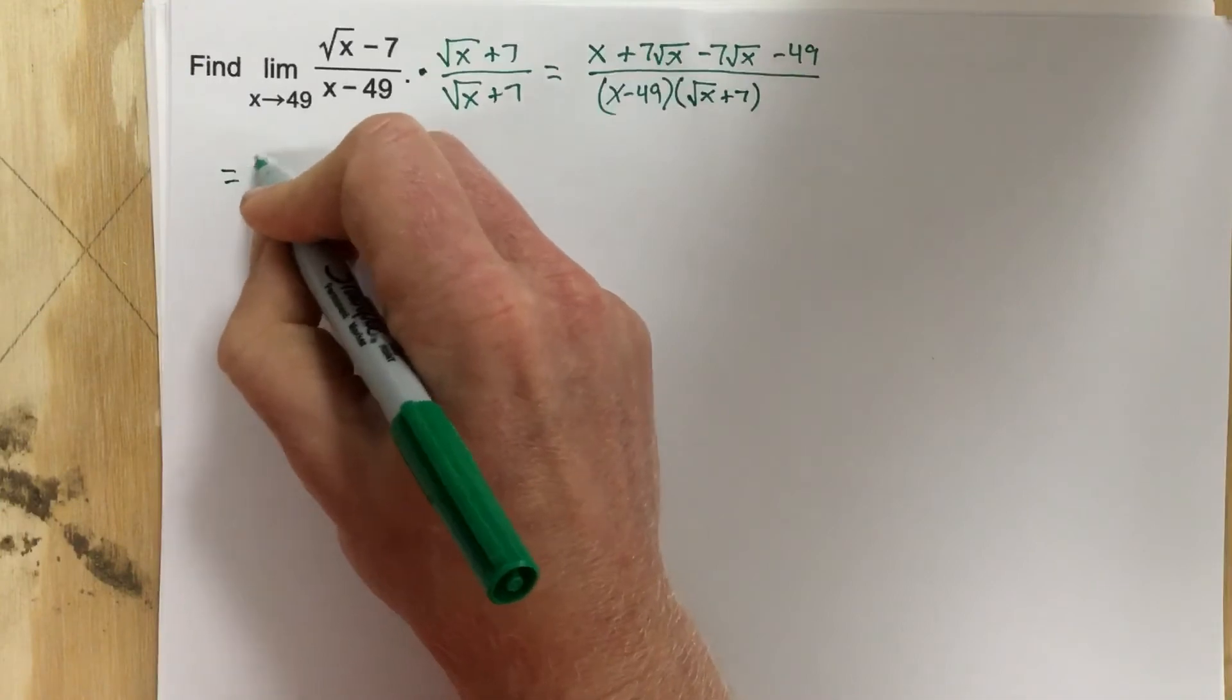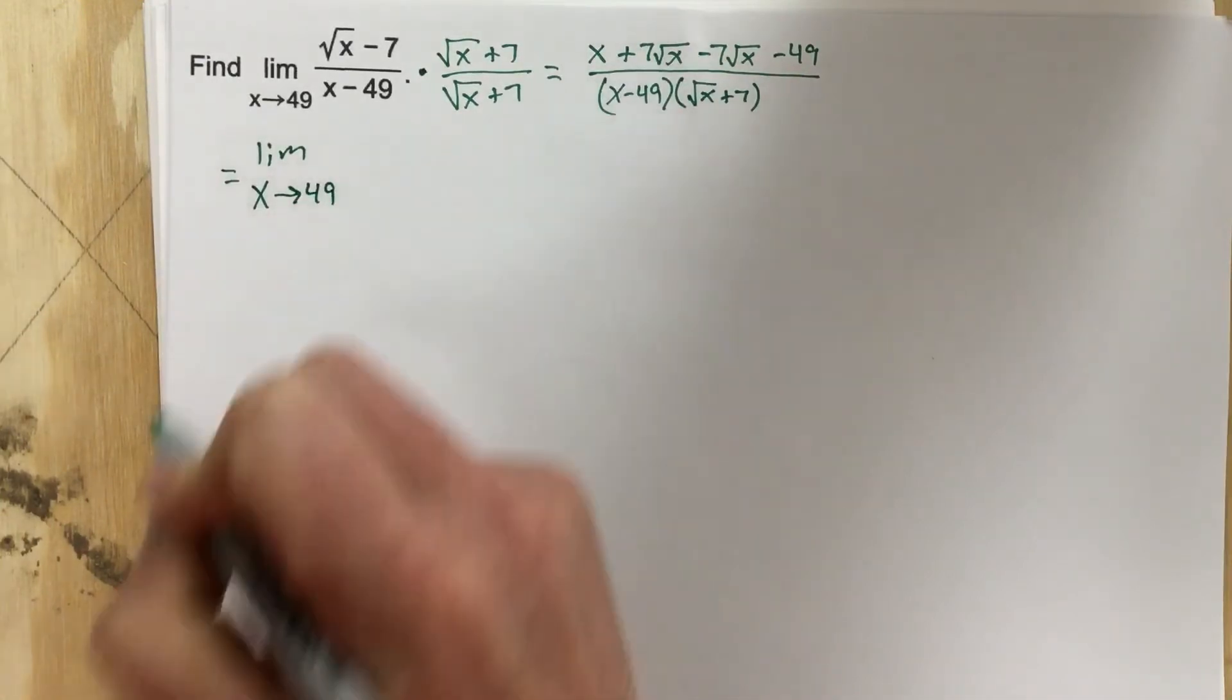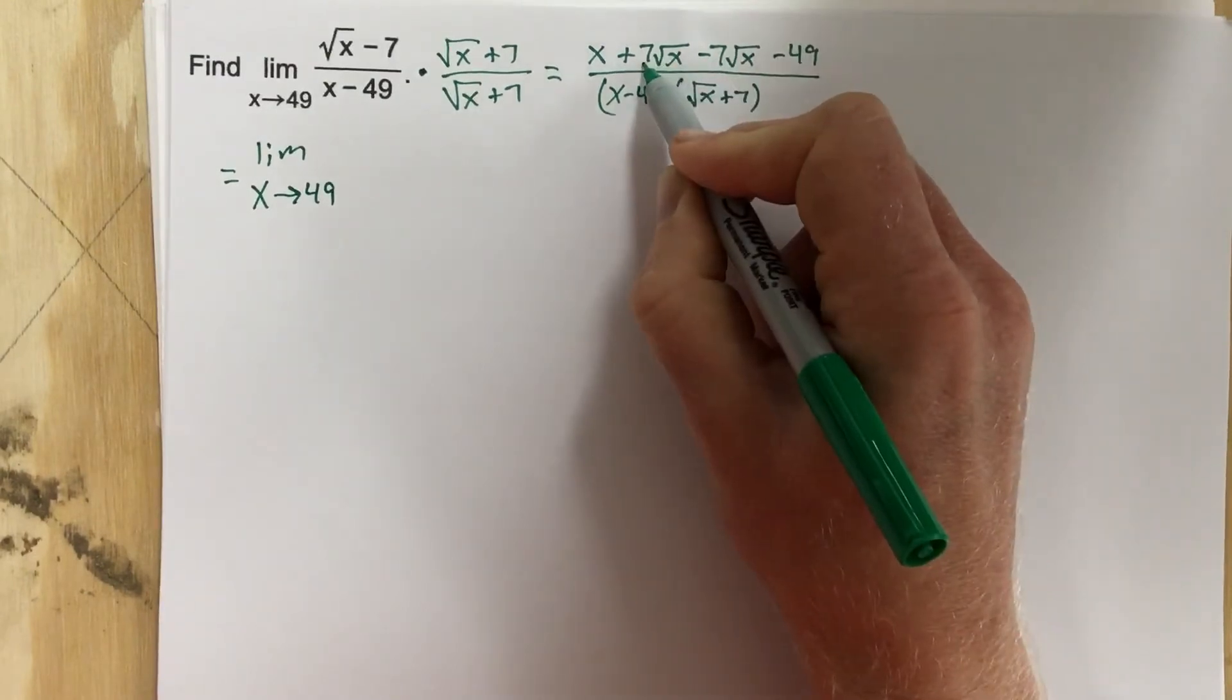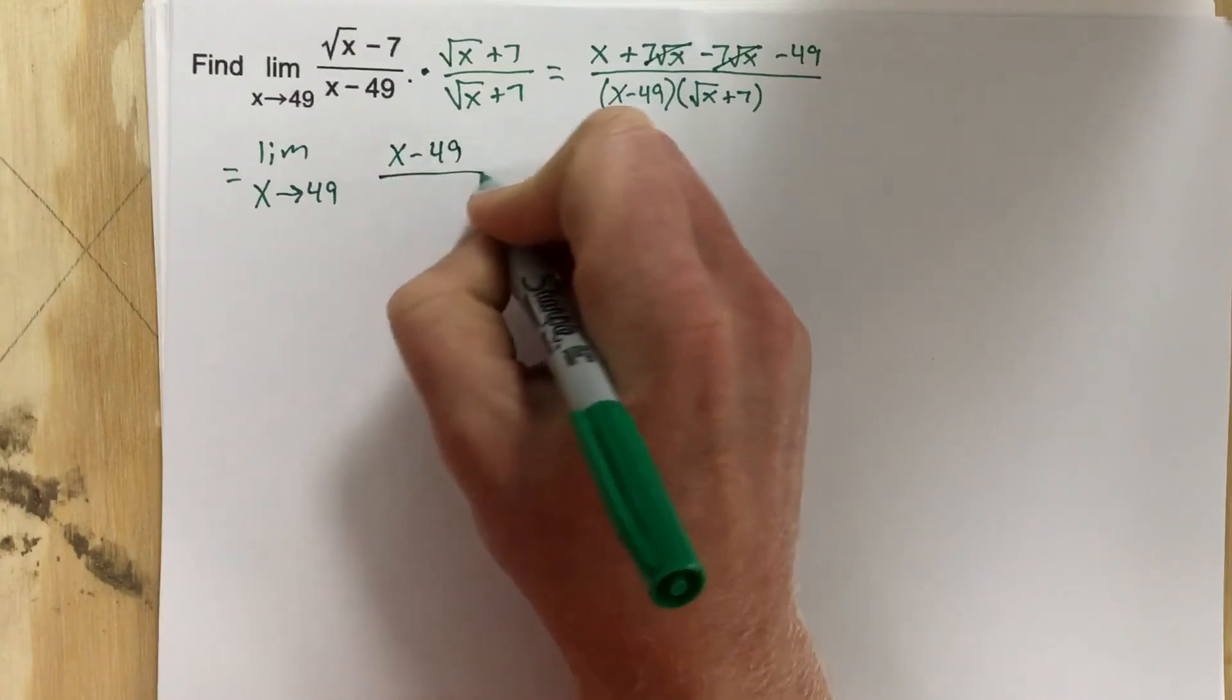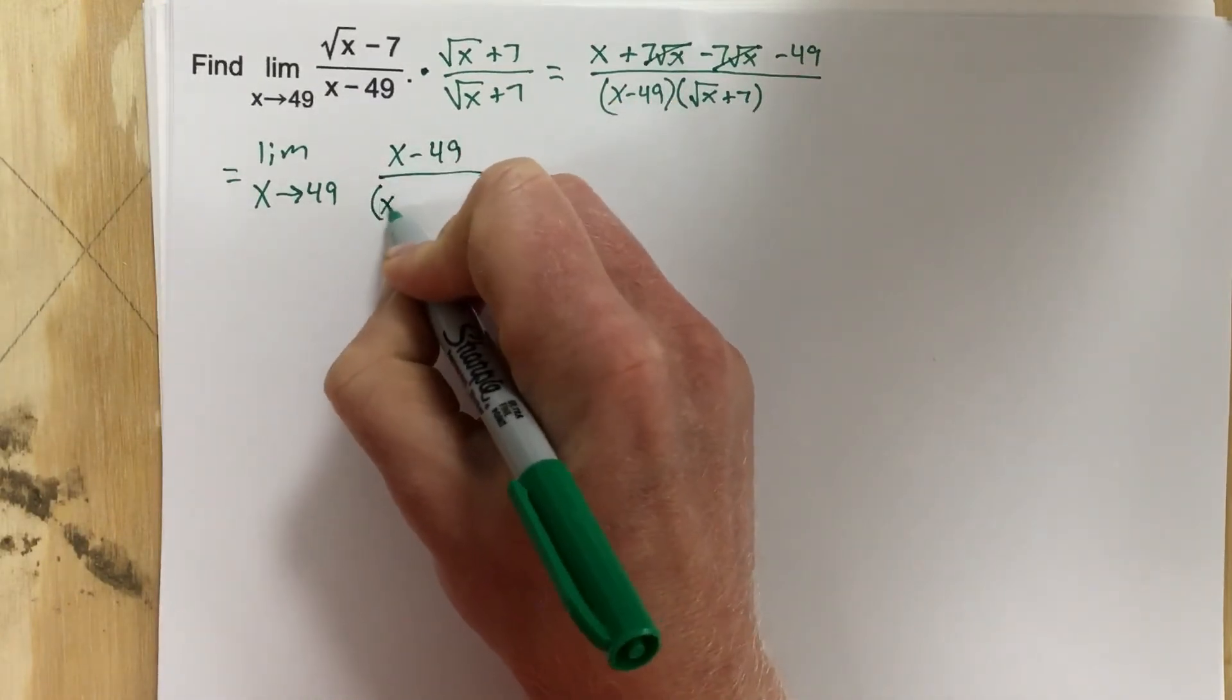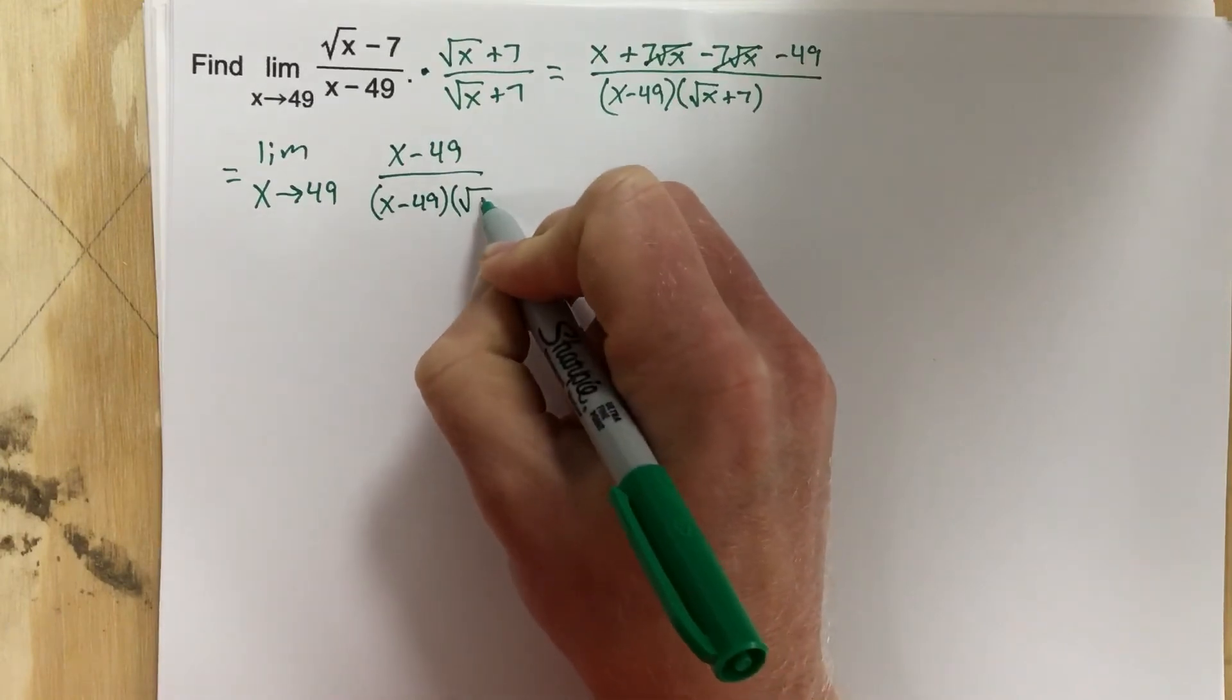So that's going to give me the limit as x approaches 49. I can cancel this and this, and I end up with x minus 49 on top over x minus 49 times root x plus 7.